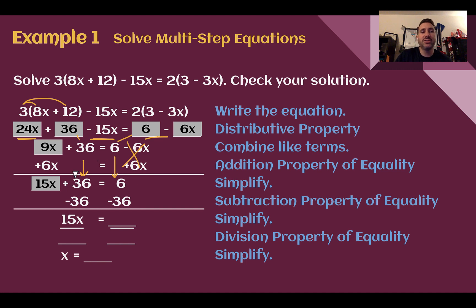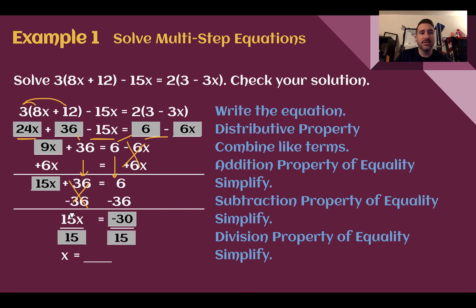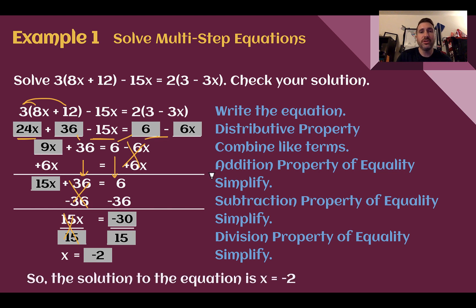Now we're down to a two-step equation: 15x plus 36 equals 6. I'm going to subtract 36 from both sides — we made 0 on the left, and 6 minus 36 is negative 30. Finally, dividing both sides by 15 since the coefficient in front of the variable is 15. Negative 30 divided by 15 ends up being negative 2. So the solution to this equation is x equals negative 2. We got rid of the parentheses first using the distributive property, then used properties of equality to solve for our variable.